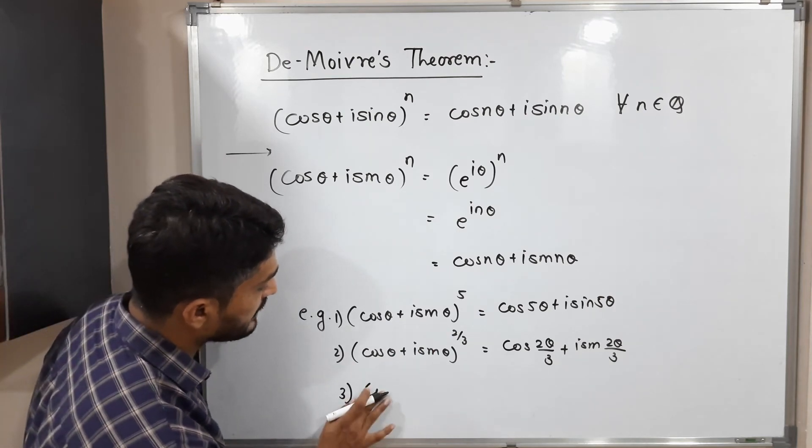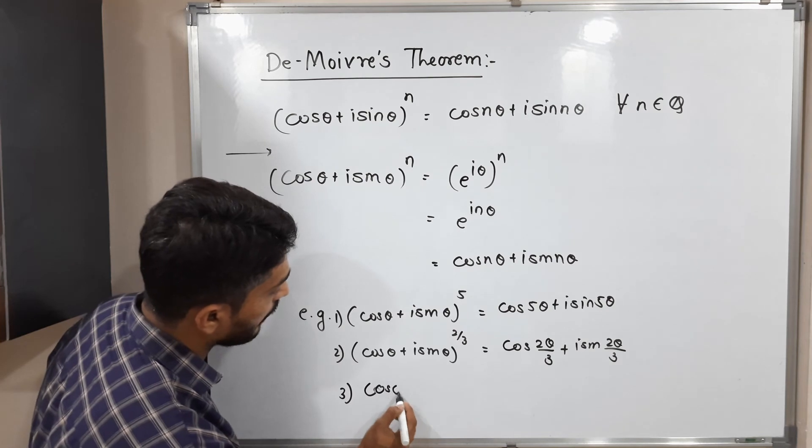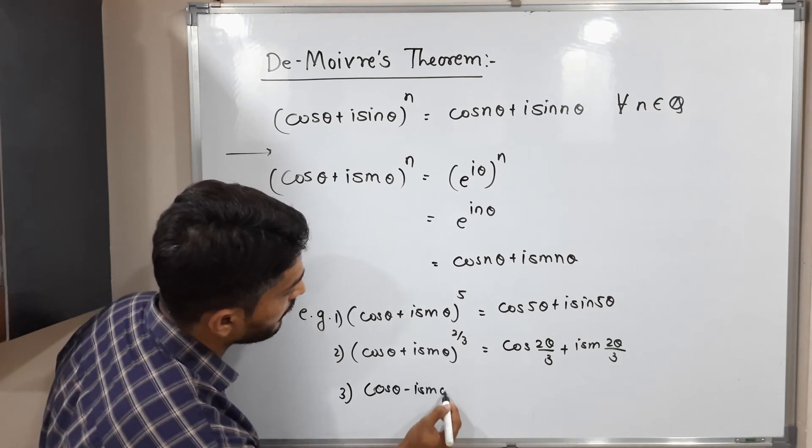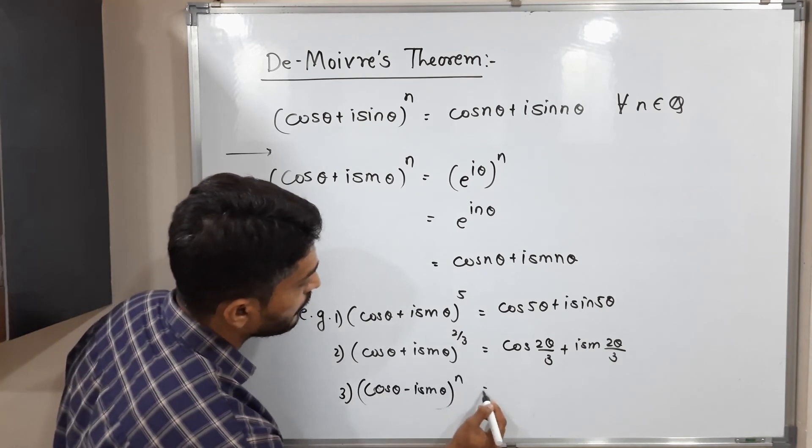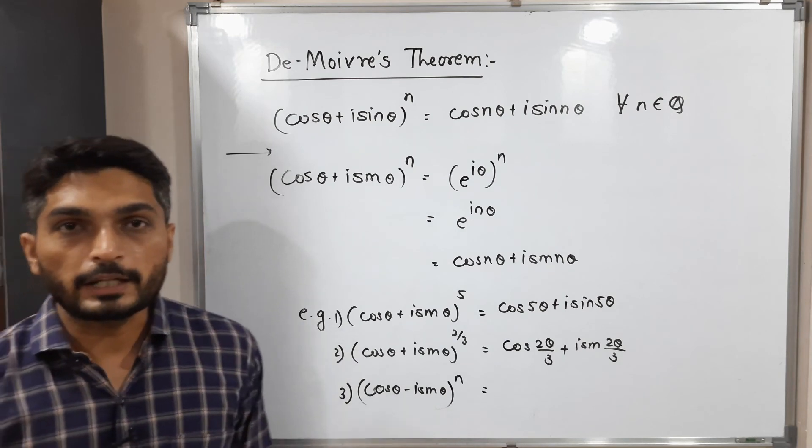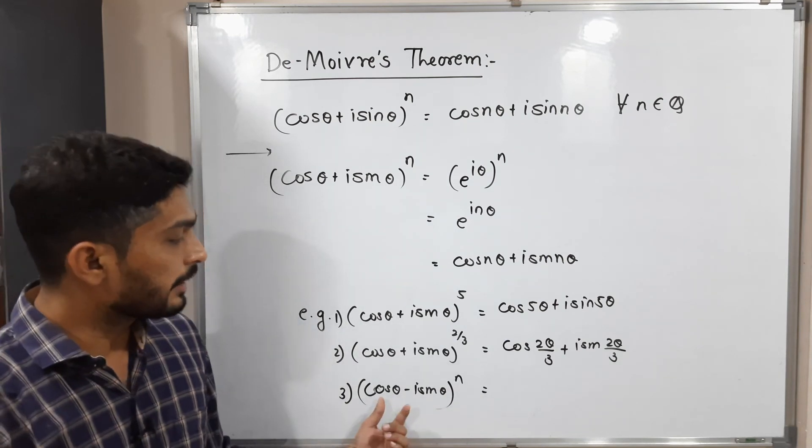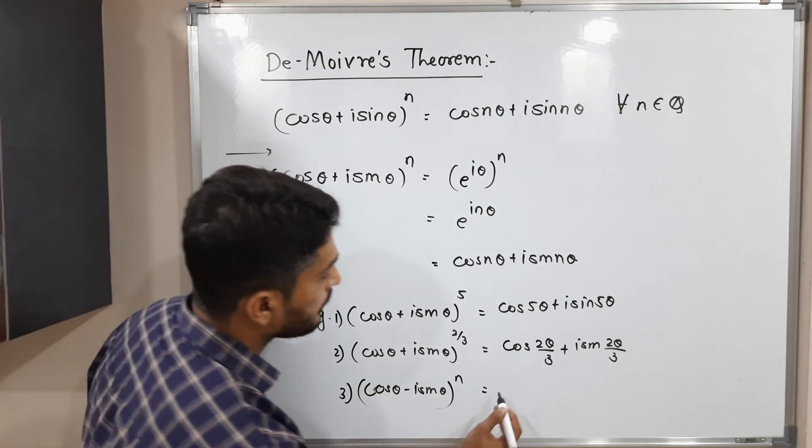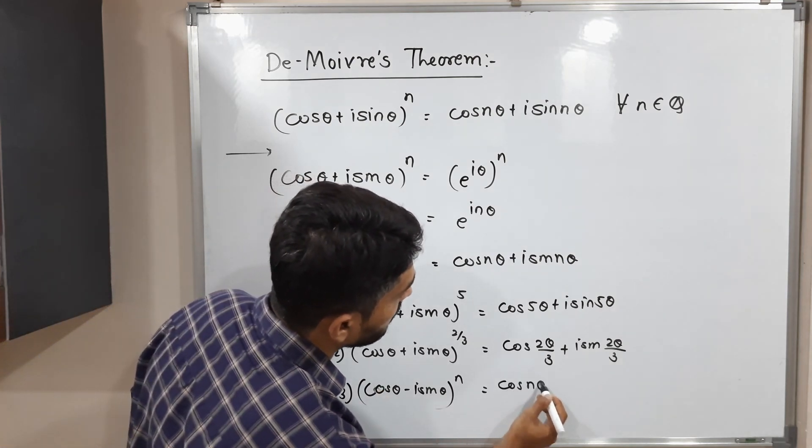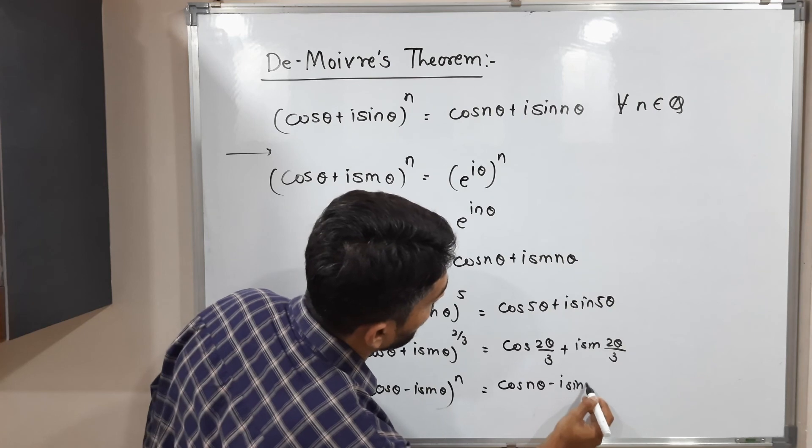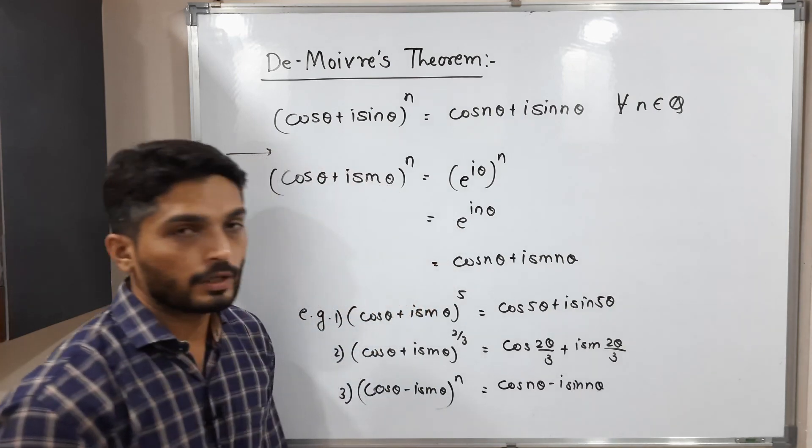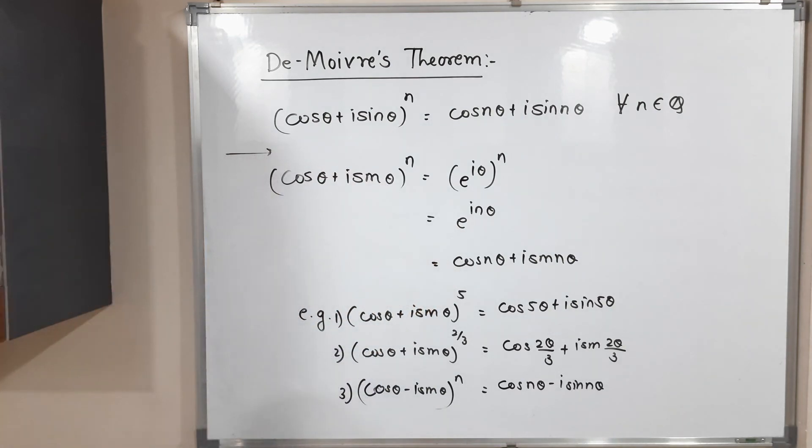Suppose we have a minus sign here. Suppose (cos θ - i sin θ)^n. So in this case also we can use De Moivre theorem if there is minus sign between that real and imaginary part. So we can write here cos nθ - i sin nθ, okay.